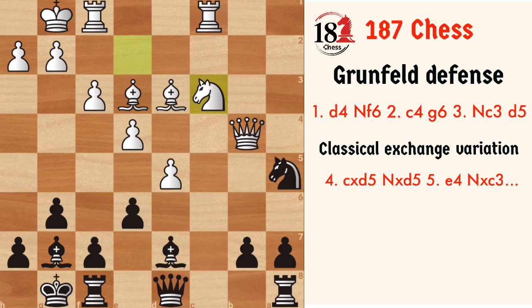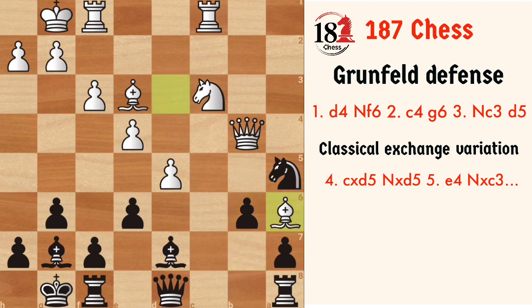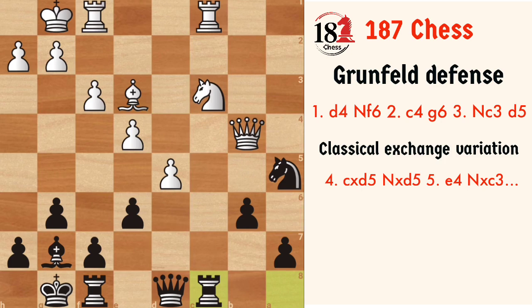The theory continues with b6, protecting the knight. The main idea is to remaneuver the knight to the c5 square, and understanding that, white tries to stop it. The game can continue with Bc8, and after captures and captures, this position is actually equal. But because black has two pawns on the queenside, it's practically easy to play with the black pieces, and you can try this in your games. Theoretically, it has been a draw.